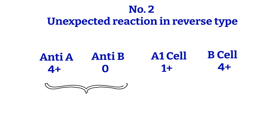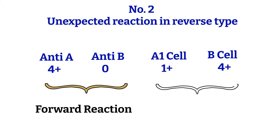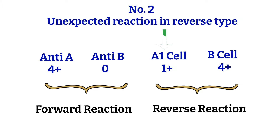I'll give you some hints. First, determine: is this a forward or reverse issue? Looking at the given reactions, you can see that the A1 cell has the weakest reactivity, and that is from the reverse reaction. Since the weaker reaction is in the reverse type, it is more likely that the discrepancy is in the reverse.